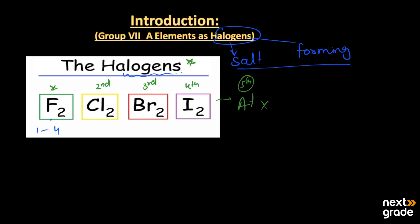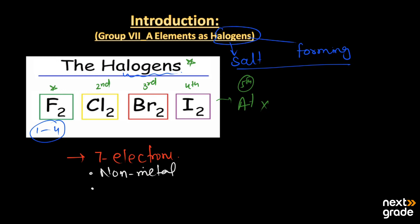The main property of these halogens is that, as a Group 7 element, they contain seven electrons in their valence shell. They are non-metals, and because they have seven electrons they can gain one more electron to complete their octet or valence shell. This makes them electronegative in nature.